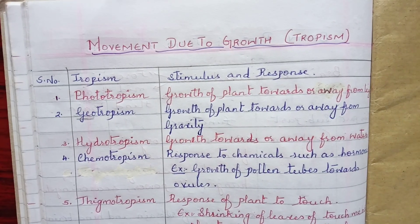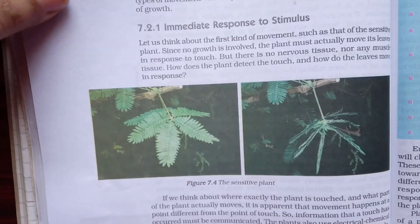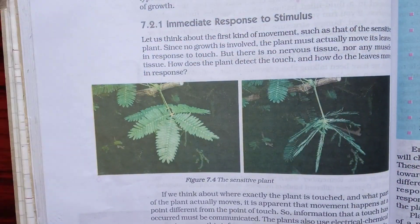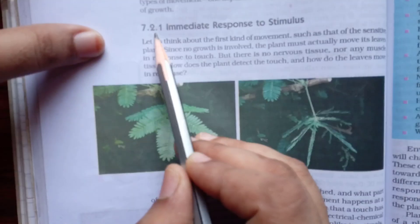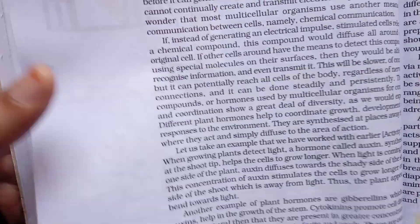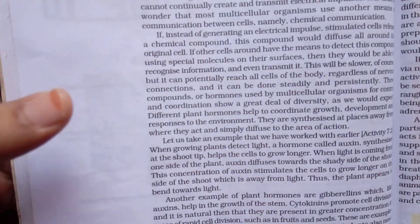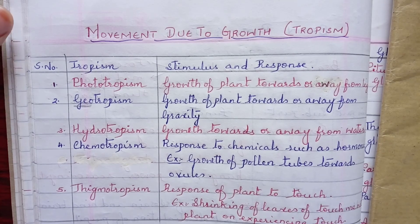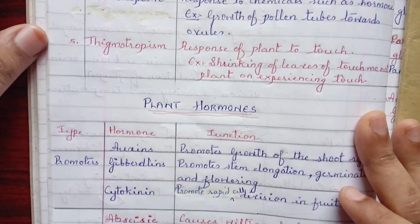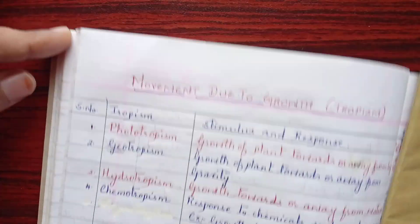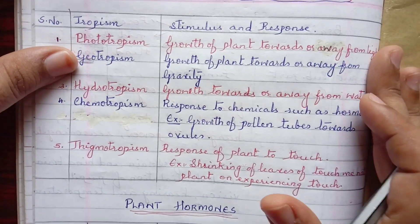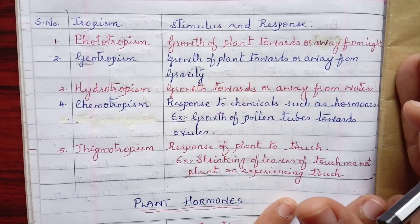Regarding this topic, hormones as well as tropisms are given all together jumbled up — sections 7.2.1 and 7.2.2, around two to three pages of explanation. In my notes it's condensed to just one page, so this is the easiest and simplest version of remembering the entire concept.